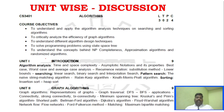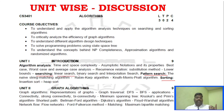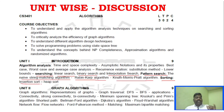Unit 1 covers three areas: Searching, Pattern Search, and Sorting. For Part B questions, the key algorithms are: Linear Search (12 marks), Binary Search (12 marks), Interpolation Search (12 marks), Naïve String algorithm (12 marks), Rabin-Karp algorithm (12 marks), and the KMP algorithm (13 marks). Insertion sort and Skip list are also included.